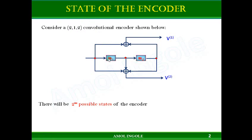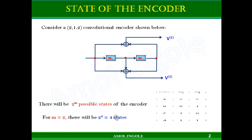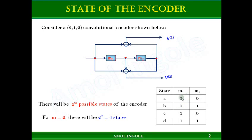If there are two memory units, then the state of the encoder will be 2 raised to power m — there will be 2^m possible states. Here the number of memory units is 2, so there will be 2^2 = 4 states. These 4 states are the different bit combinations that m1 and m2 are holding. For example, if m1 and m2 are holding 0,0 bits, this will be called a state of the encoder — 4 possible combinations total.